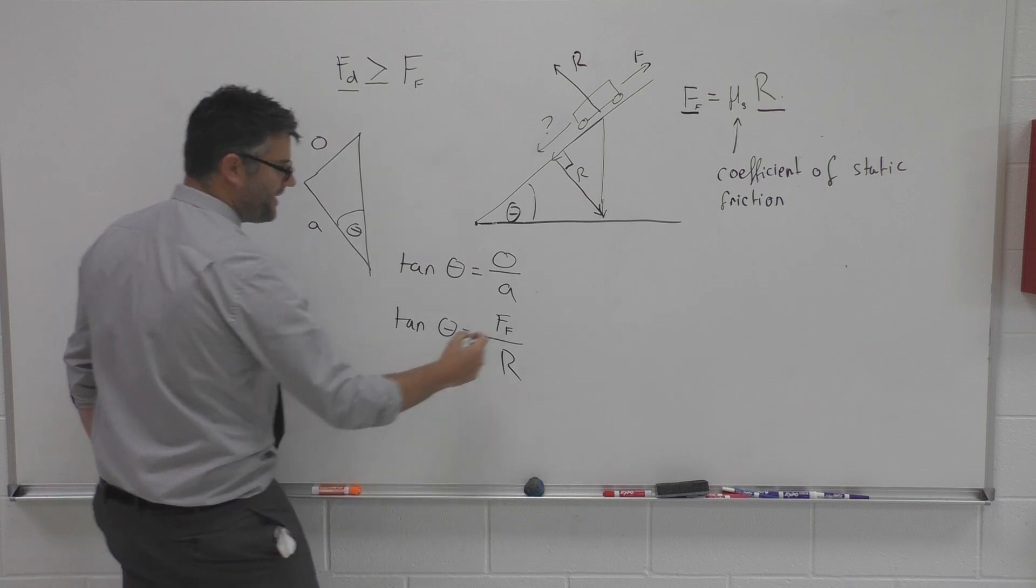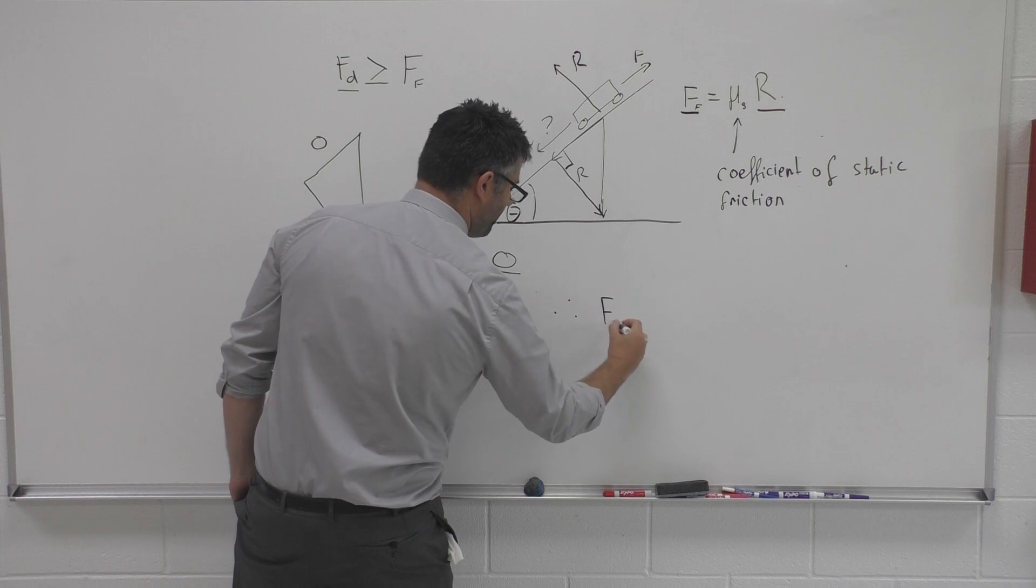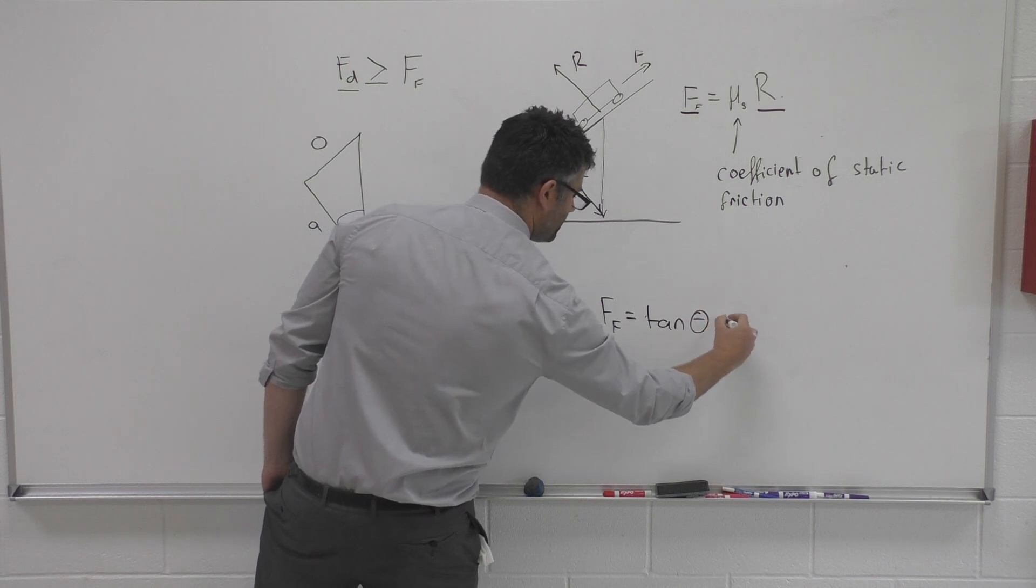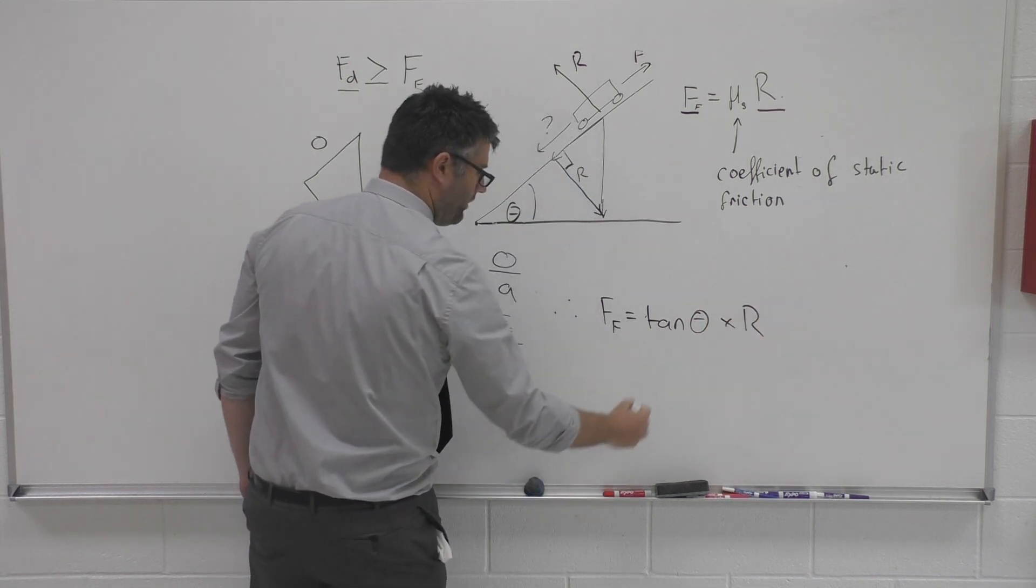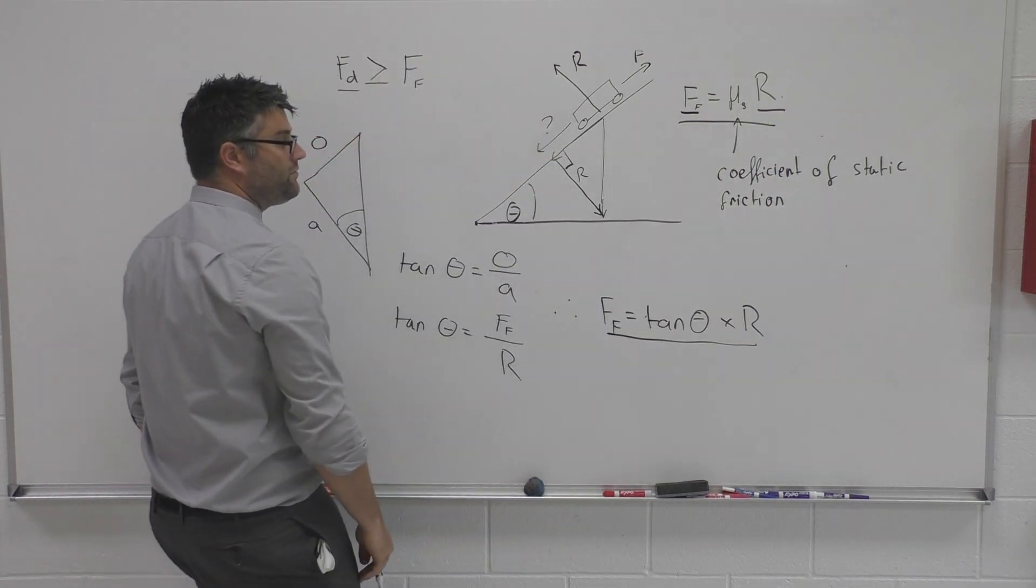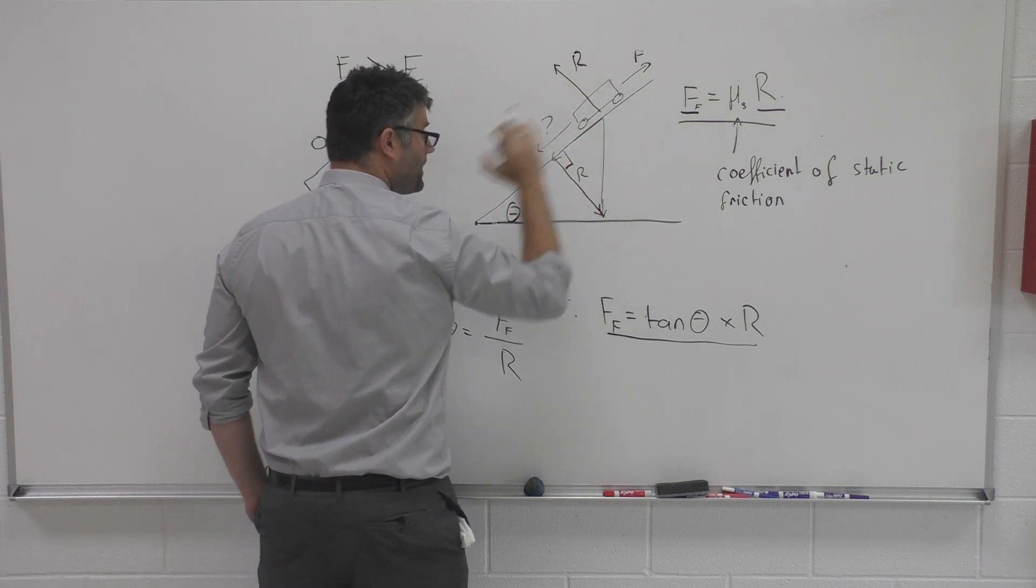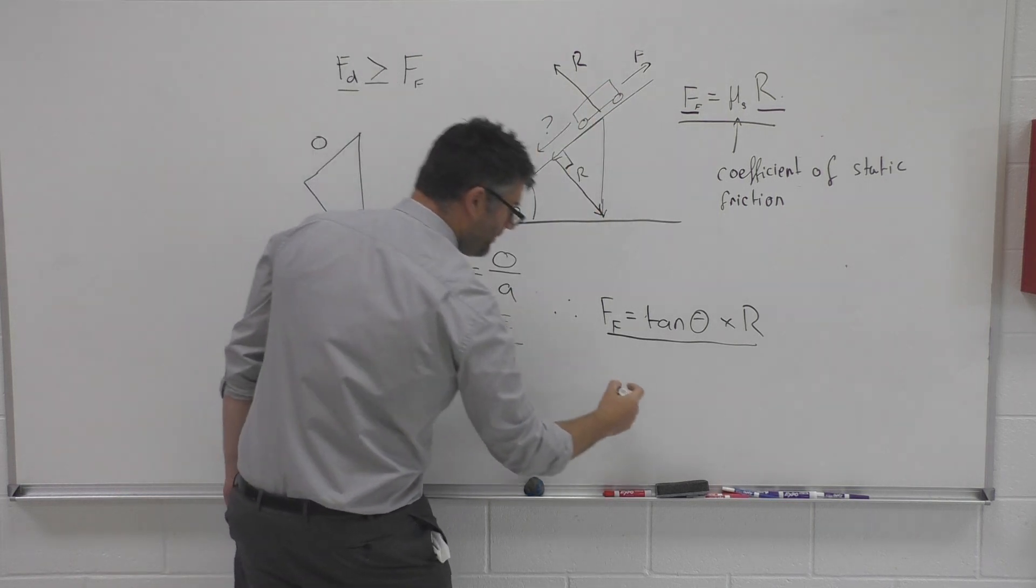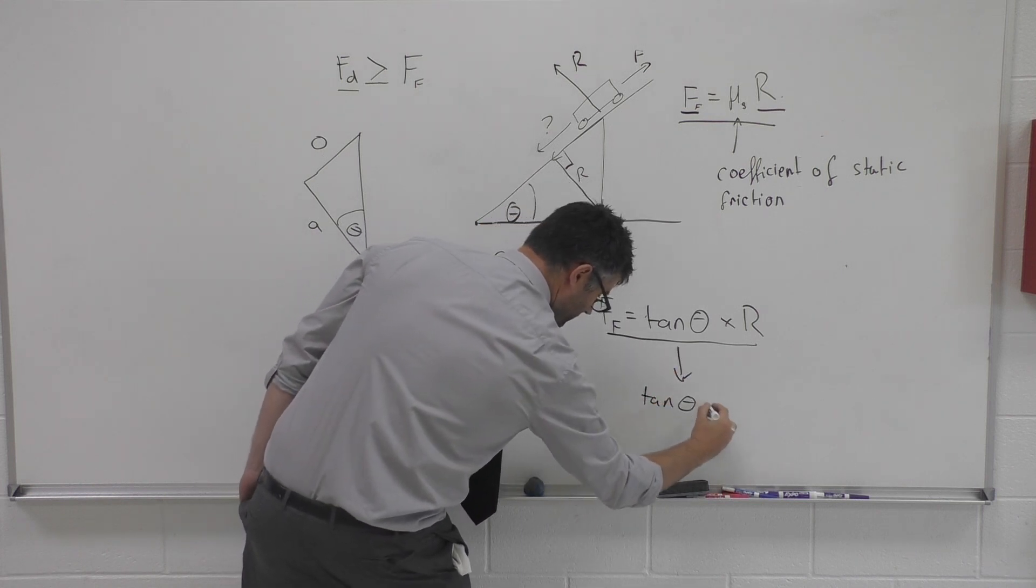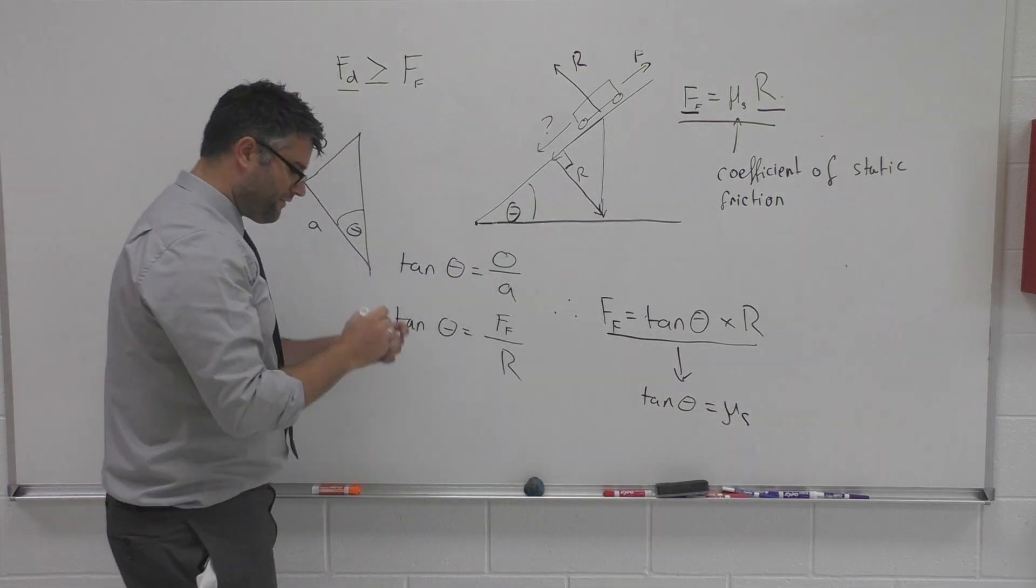And which then, therefore, that means that if we rearrange this, F force of friction should be equal to tan theta times by R. Well, look at that. This is the same equation as above. And it tells us effectively that in this situation, at a point where this car just starts moving, that tan theta will be equal to coefficient of static friction.